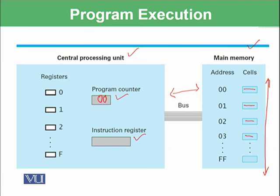The instruction register will hold the content of the cell at address 00. As soon as the instruction is fetched and placed within the instruction register, the program counter is incremented by 1 or by 2. It will be incremented by 1 when the next instruction is available in the next location. However, if our instruction is comprised of 2 bytes, then this addition would be of 2 bytes. Similarly, the program will keep executing, fetching instructions, with the program counter pointing to the next instruction and executing it within the central processing unit.